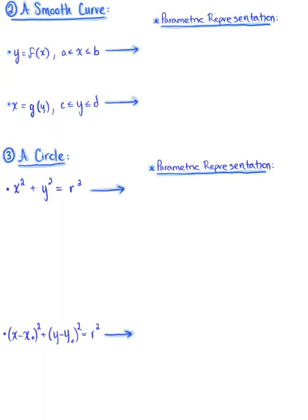The second parametric equation I'd like to review is that for smooth curves, and there are two cases to look at. Case 1 is when we have a smooth curve defined as y = f(x), where a ≤ x ≤ b. In this case, we simply let x be the arbitrary parameter t, so y is now represented as f(t), and the bounds become t is greater than or equal to a and less than or equal to b.